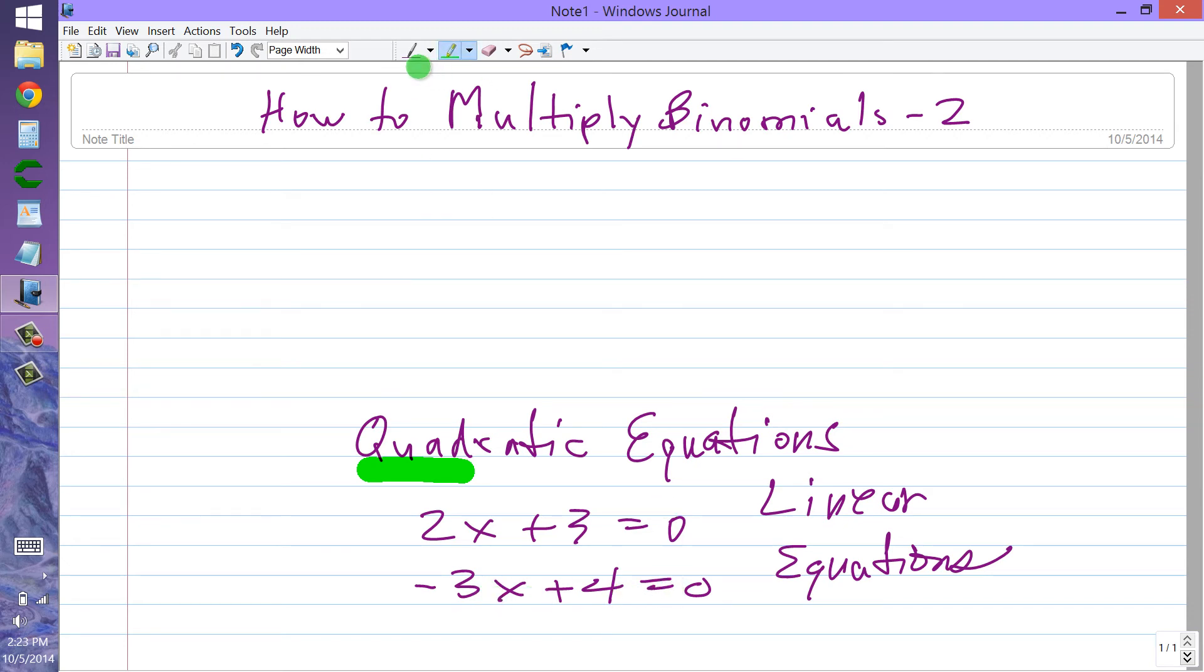The other one, minus 3x plus 4 equals zero. Let's subtract 4 from either side. Then we get minus 3x equals minus 4. Now, we can multiply this equation through. That means multiply either side or both sides by minus 1 to get rid of these minus signs.